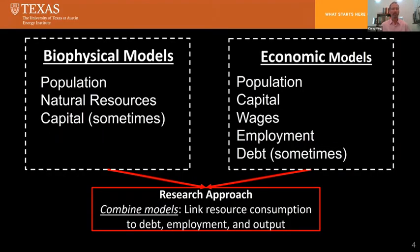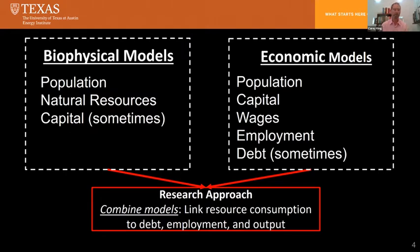The basic concept is to blend what I would call biophysical models — that have population, natural resources, capital as a physical quantity like machines or a power plant — with economic models that also describe population capital, usually as a monetary quantification: wages, employment, and sometimes debt. The HARMONY model asks how we can combine these ideas in the most basic way to then explore feedbacks between the physical environment and economic outcomes.